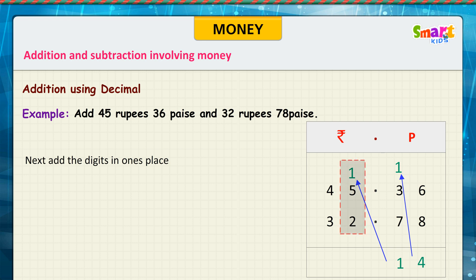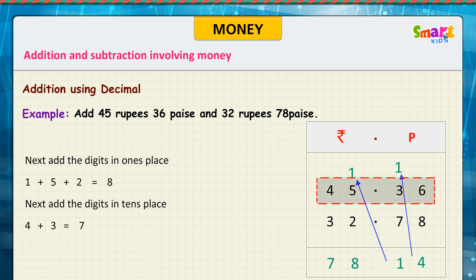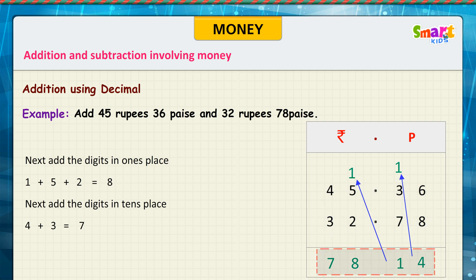Next, add the digits in the ones place. 1 plus 5 plus 2 is equal to 8. Next, add the digits in the tens place. 4 plus 3 is equal to 7. Therefore, 45.36 plus 32.78 is equal to 78.14.